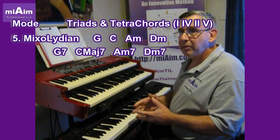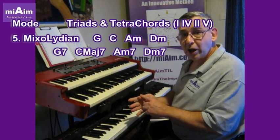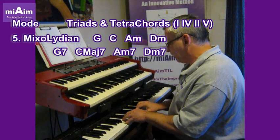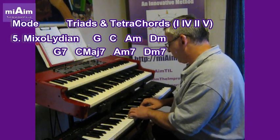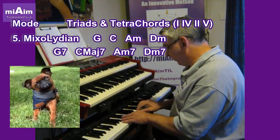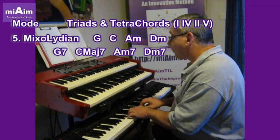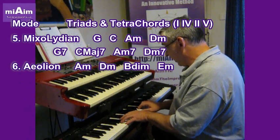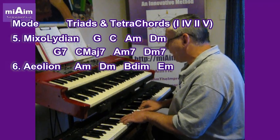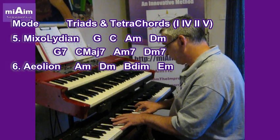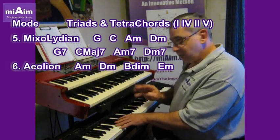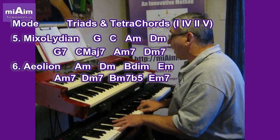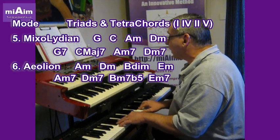The Aeolian is the sixth. Easy to remember if you're in the key of C — A is the sixth note, A for Aeolian. It's the relative minor, so it'll have a really sad sound. It goes tone, semitone, tone, tone, semitone, tone, tone. So you can already hear that sad sound, and all the chords have a minor quality. The triads are A minor, D minor, B diminished, and E minor. The four note tetrachords will be an A minor seventh, a D minor seventh, a B minor seventh flat five, and an E minor seventh.